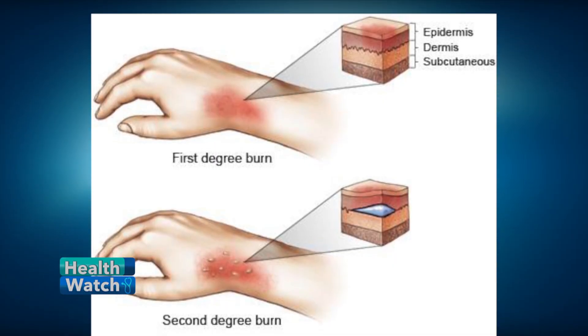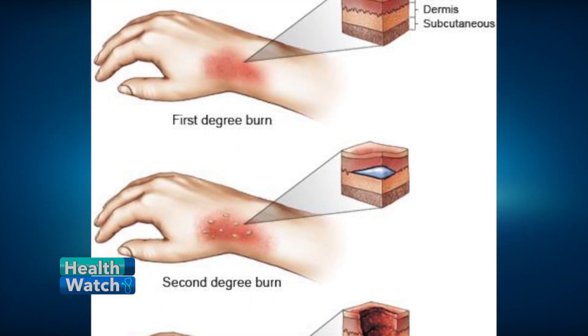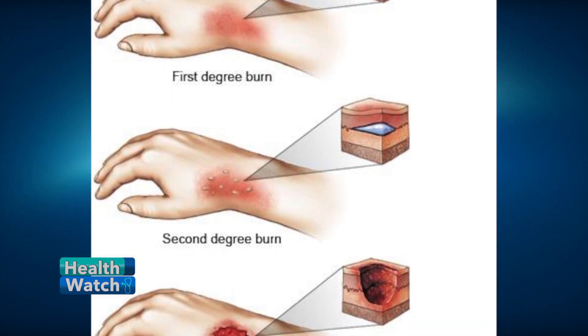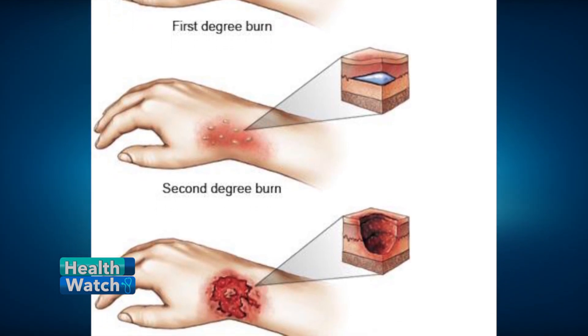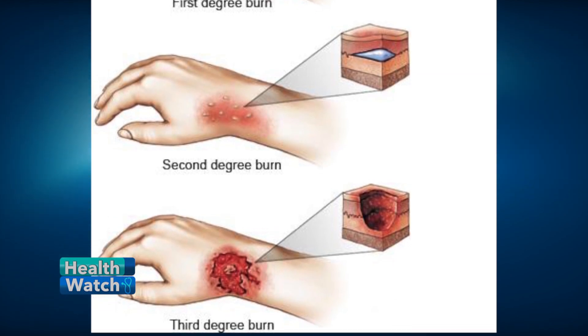In hospital, the main thing we do immediately is assess the severity of the burns, the extent of burns, and which parts of the body are affected. That will determine whether you need to go to theatre immediately, be transferred to the intensive care unit or high dependency unit, or even need to be intubated and helped by machines to breathe.